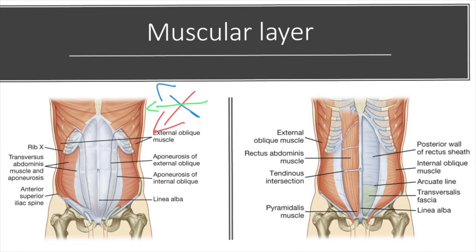The last important concept regarding these muscles is the rectus sheath. The two vertical muscles are enclosed by what we call the rectus sheath. Remember those three flat muscles — their aponeuroses, as they come toward the anterior midline and connect to the linea alba, make up the rectus sheath. Anteriorly, the end of those three flat muscles forms the rectus sheath which encloses the vertical muscles.